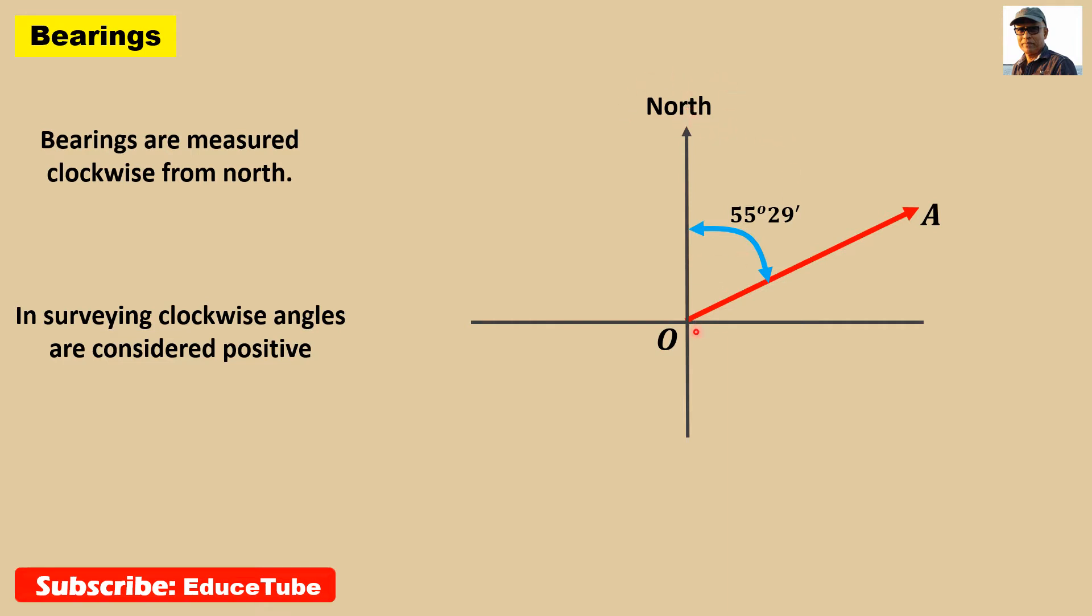For this line OA, it has bearing 55 degrees 29 minutes. How does it come? Because these angles are measured clockwise from this reference direction north. As well, in surveying, these clockwise angles are considered positive.